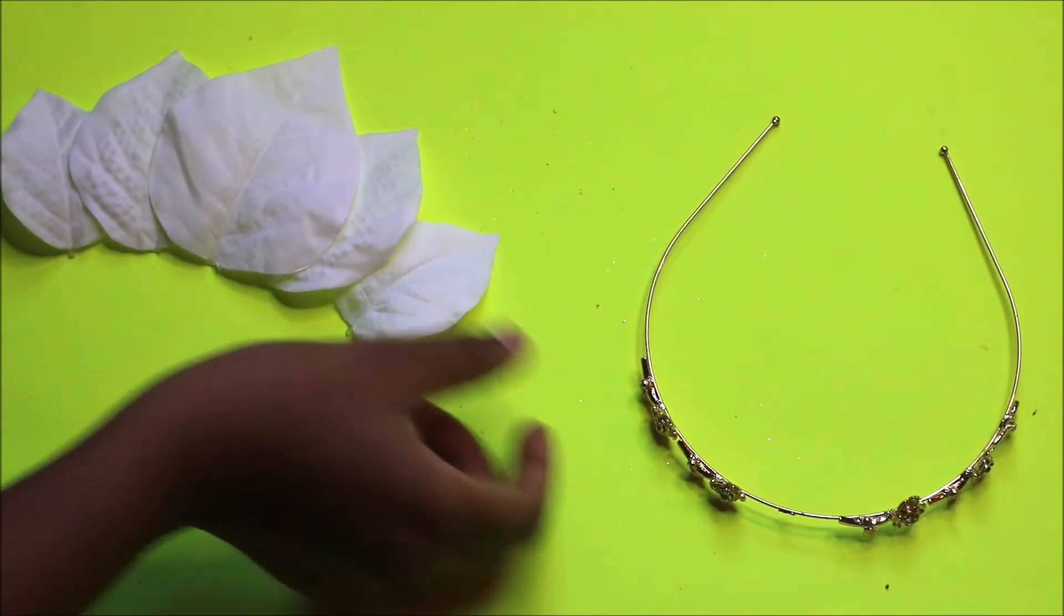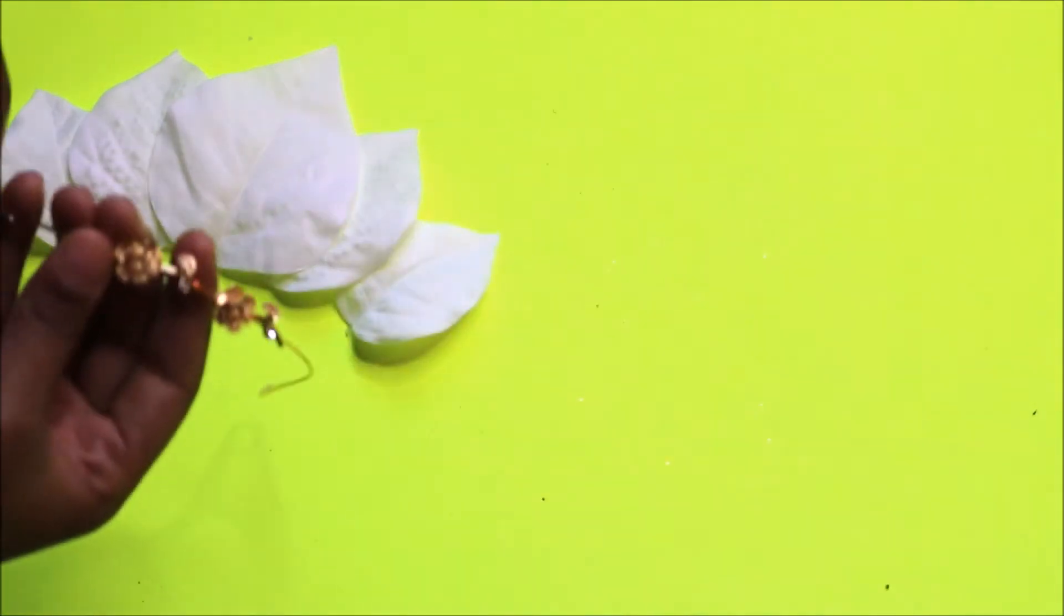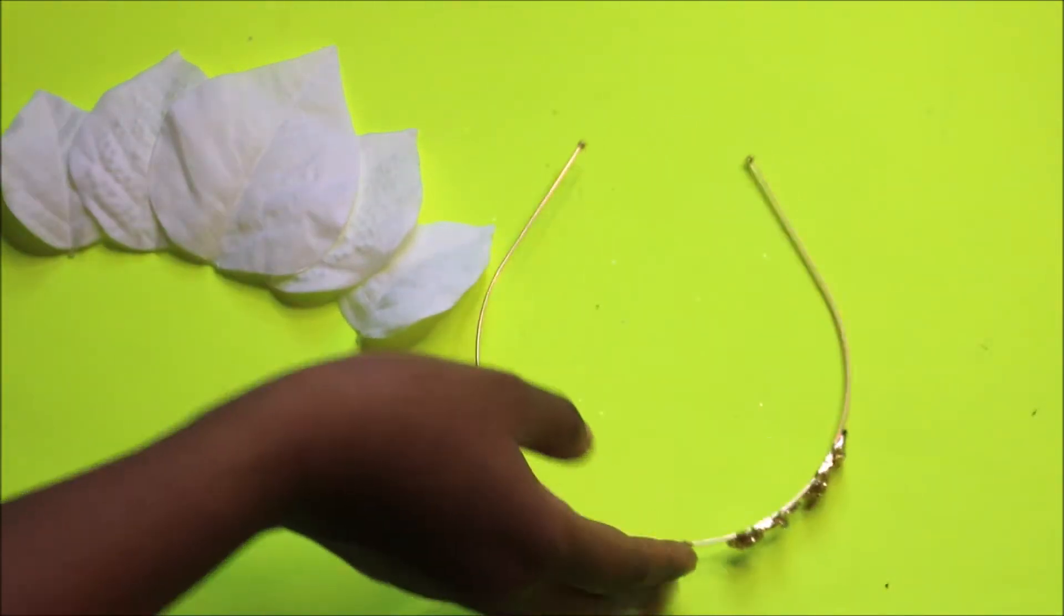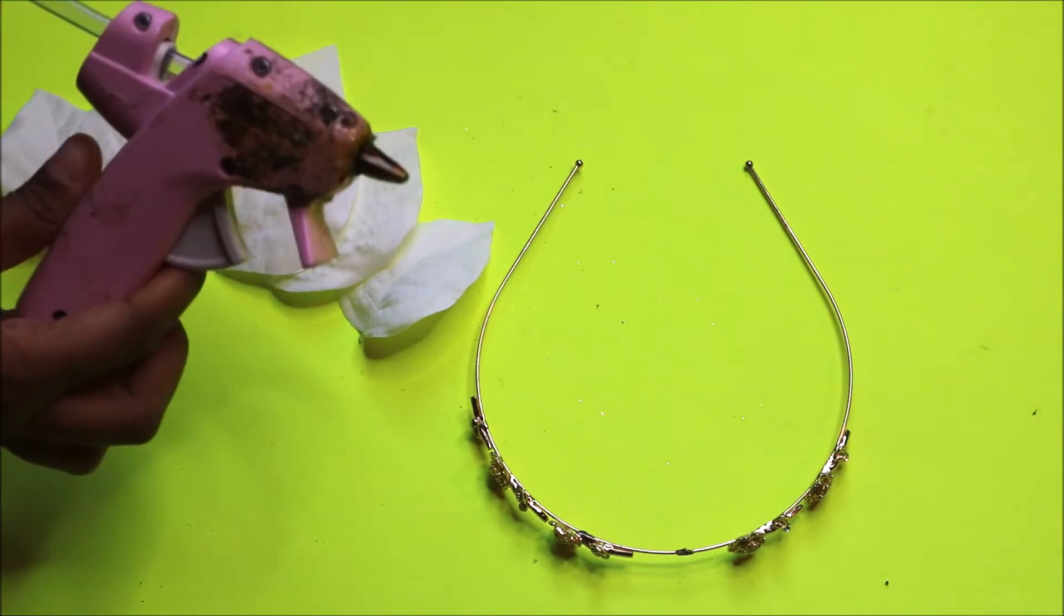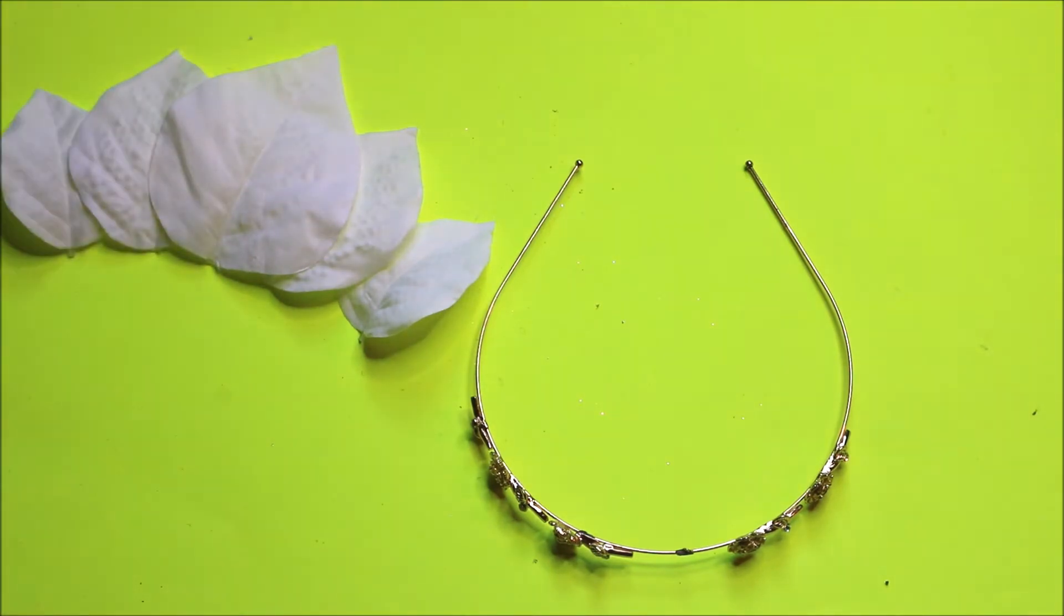So I went ahead and sized the petals for my crown. You're going to need one large, two medium, and two small. I also laid them out in order to make it easier when I start gluing them to the crown.